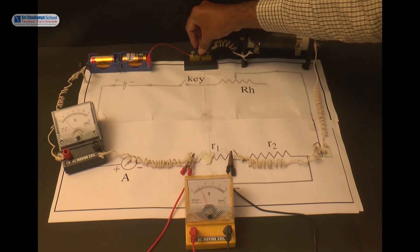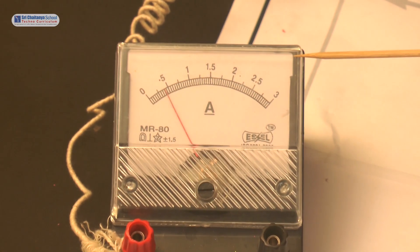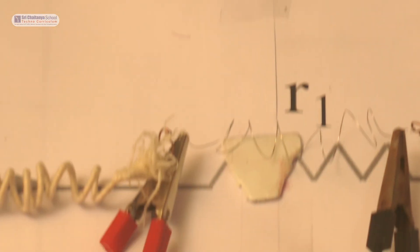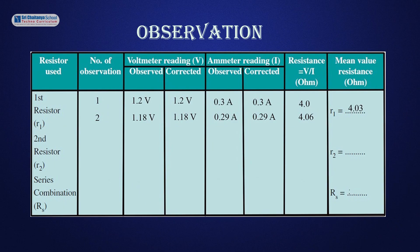Let us see the observation. When the first resistor is connected in series, the ammeter reading is 0.3 ampere and voltmeter reading is 1.2 volts, so the corresponding resistance is 4 ohm. In trial 2, the ammeter reading is 0.29 ampere and voltmeter reading is 1.18 volts, so the corresponding resistance is 4.6 ohm. Therefore, the mean resistance of the first resistor is 4.03 ohm.